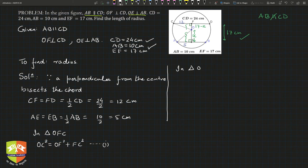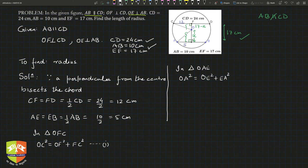Similarly, in triangle OAE: OA² = OE² + EA²  — call this equation (2). Both follow from Pythagoras' theorem.